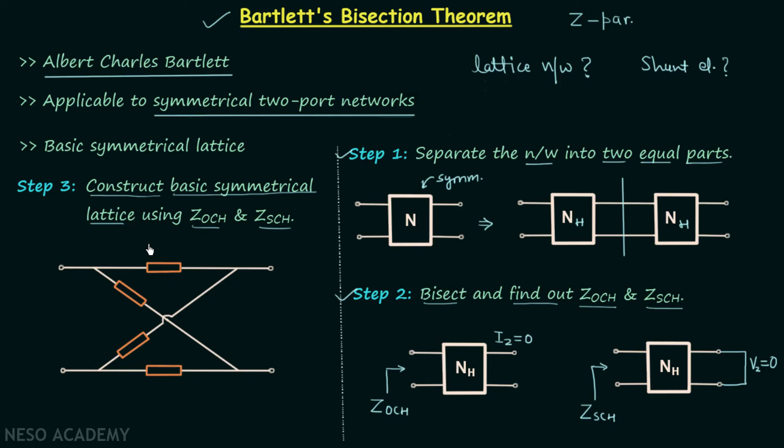This impedance is Z SCH and the opposite impedance to this is also Z SCH, and these two impedances are Z OCH. So in this way we are done with step number three and now we will have the Z parameters of this network using this basic symmetrical lattice.